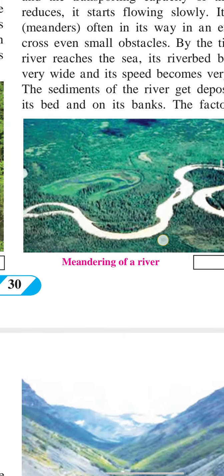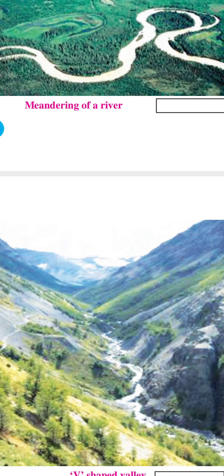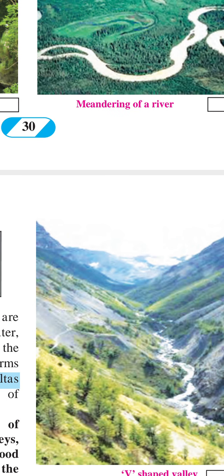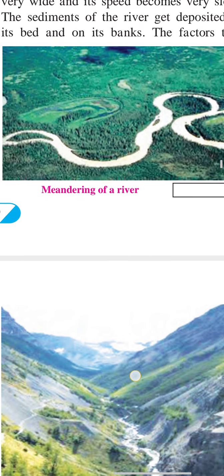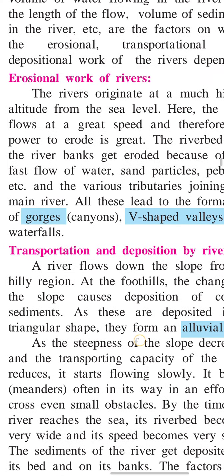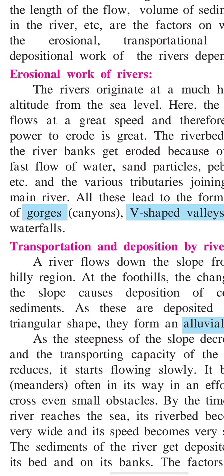The next landform is a V-shaped valley. You can see that the steep sides slope down and the river is flowing in the middle. It looks like the English letter V, and therefore it is called a V-shaped valley. That is all about the erosional work of rivers.